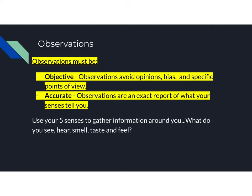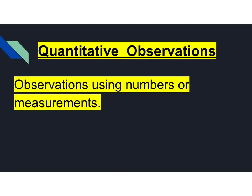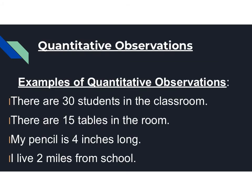Observations should be accurate. Observations are an exact report of what your senses tell you. There are two different types of observations that we're going to focus in on. The first type of observation is called a quantitative observation. These are observations using numbers or measurements. When we're doing an experiment, sometimes we make observations that include numbers or measurements, and we call those quantitative.